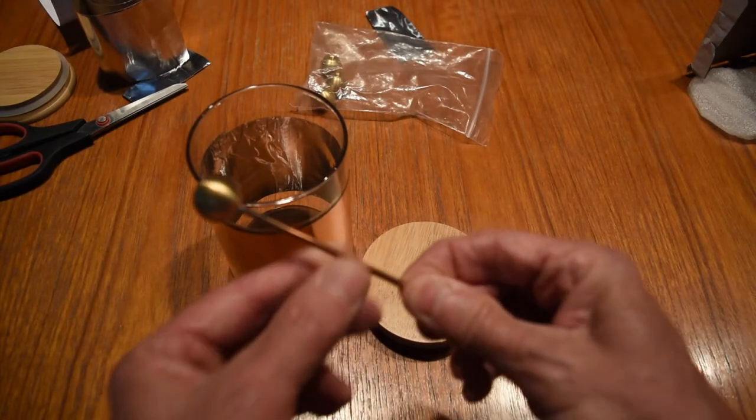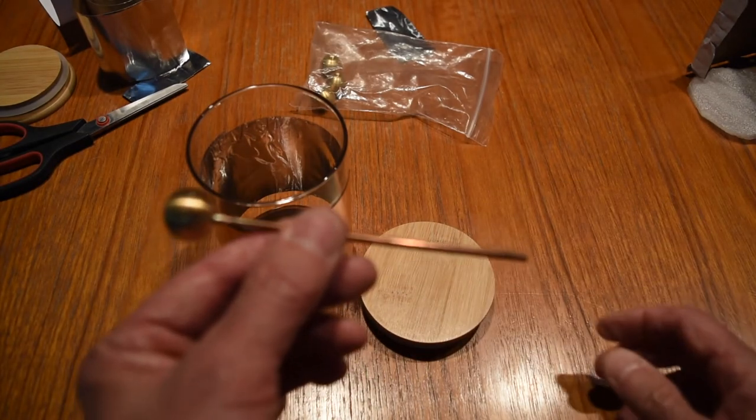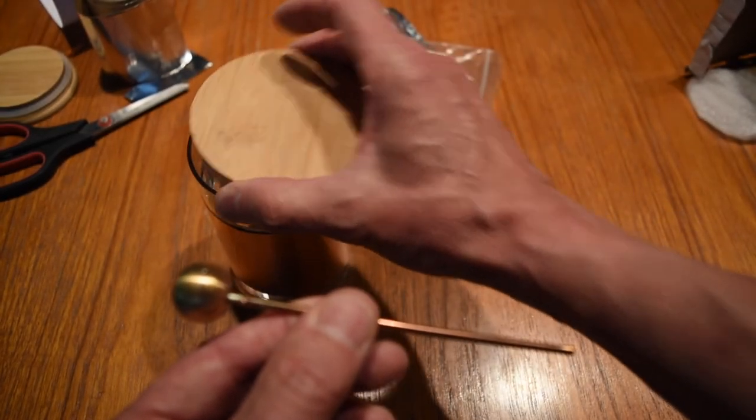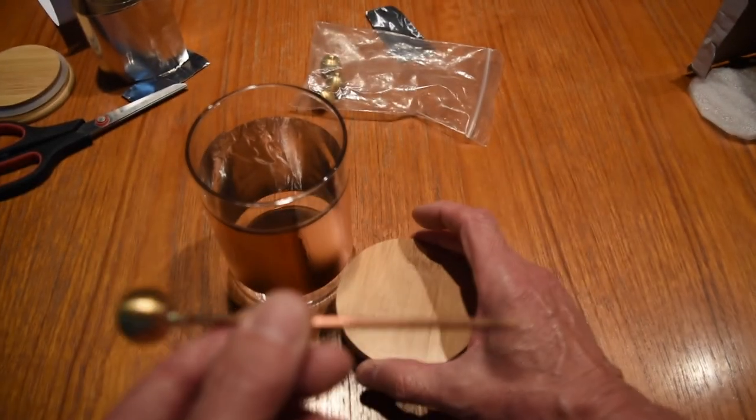Here I have the electrode. I will now drill a hole through the wooden lid to the Leiden jar through which I can place the electrode.